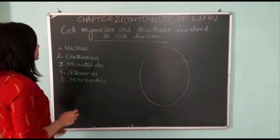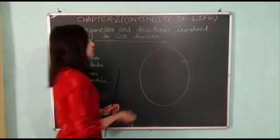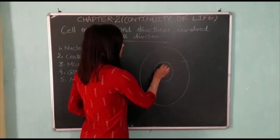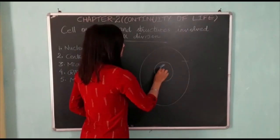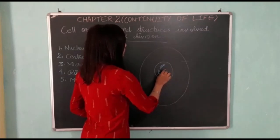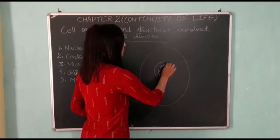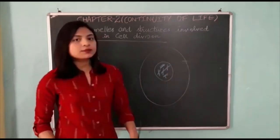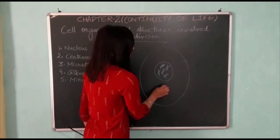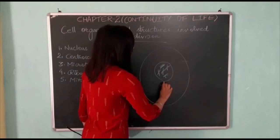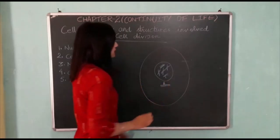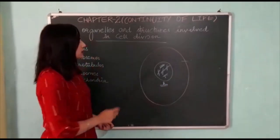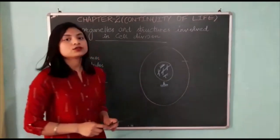Next is centrosomes. The centrosome contains DNA in the form of chromosomes. The centrioles are present inside the centrosome, and it is located in the cytoplasm, nearest to the nucleus.